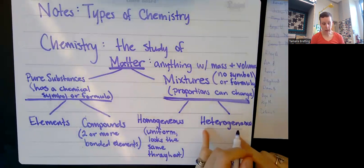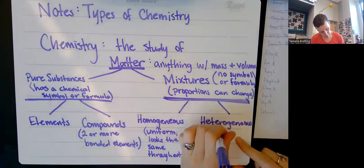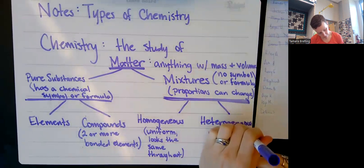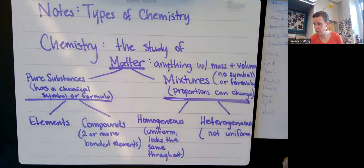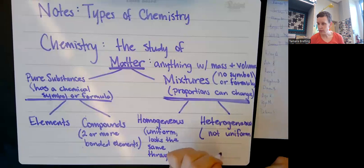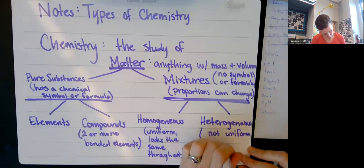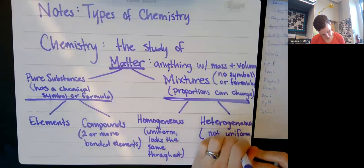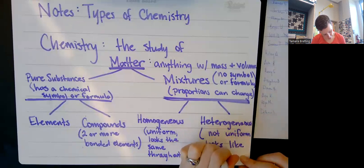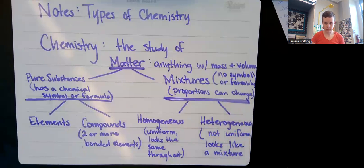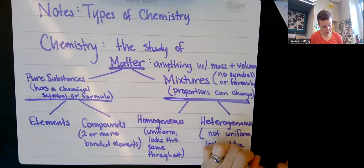Heterogeneous is the opposite of homogeneous — not uniform. It does look like a mixture, meaning you can see the different components.